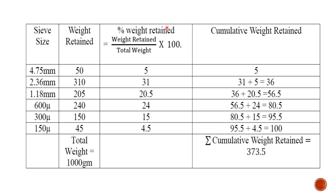Percentage weight retain is calculated by the formula: weight retain upon total weight into 100. For the first row, weight retain is 50 divided by 1000 into 100, which equals 5. For the second row, 310 divided by 1000 into 100 equals 31. For the third row, 205 divided by 1000 into 100 equals 20.5. The same procedure is applied for the remaining rows.